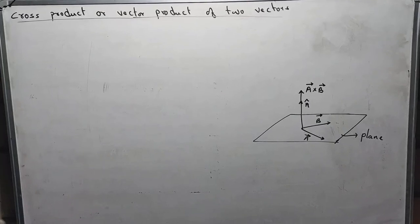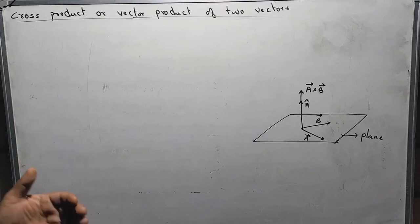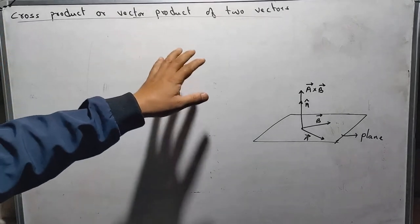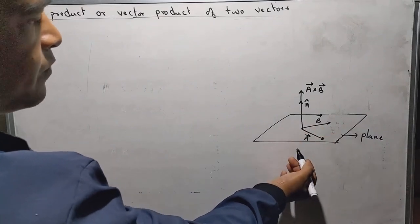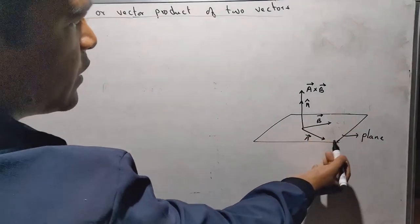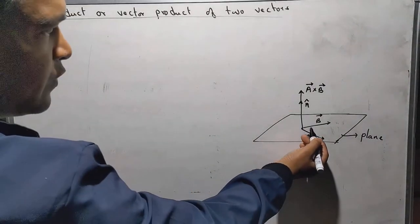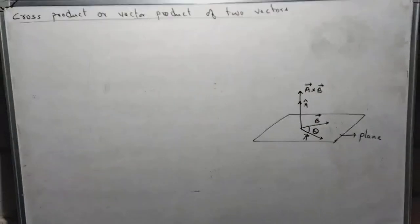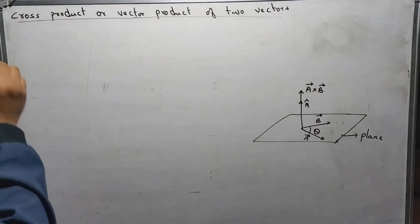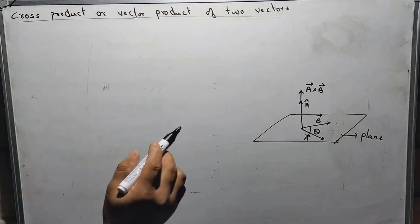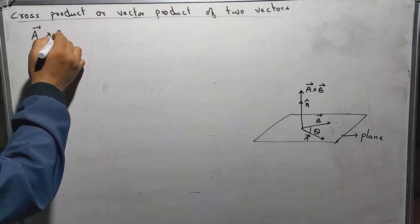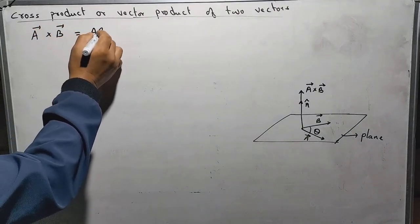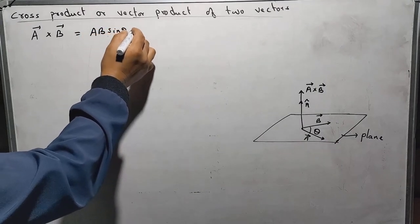This is another topic and here we shall see about the cross product or the vector product of two vectors. Suppose we consider two vectors, a vector A and a vector B. These two vectors are lying in a plane. If the angle between the two vectors is theta, then we define the cross product of these two vectors A and B as A cross B equal to A B sine theta times n cap.